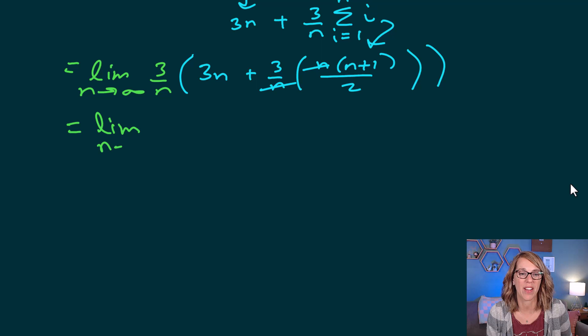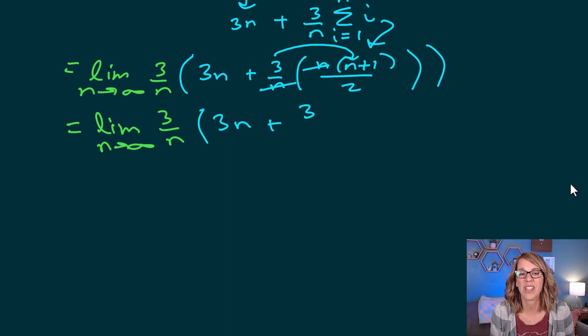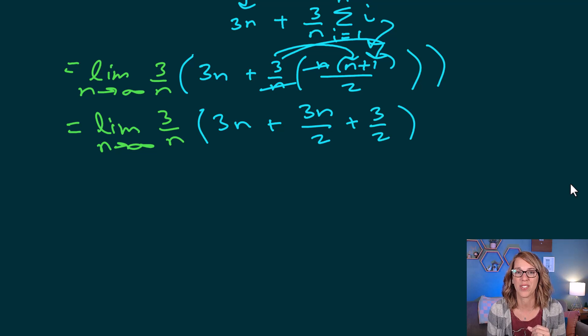Let's clean up what we've got. So now working through some algebra, limit as n goes to infinity, I'm going to leave the 3 over n out here. I've got a 3n here. Let's multiply this 3 into the n plus 1. So that's going to give me 3 times n, that's divided by 2, and then 3 times my 1, which is also divided by 2, which is 3 over 2.